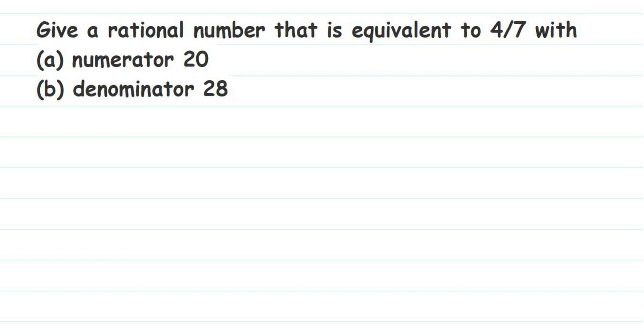Hello everyone, here's a question on rational numbers. The question is: give a rational number that is equivalent to 4/7 with (a) numerator 20 and (b) denominator 28. We need to find an equivalent rational number of 4/7 where in the first one we have to find the numerator which is 20 and the denominator should be 28.